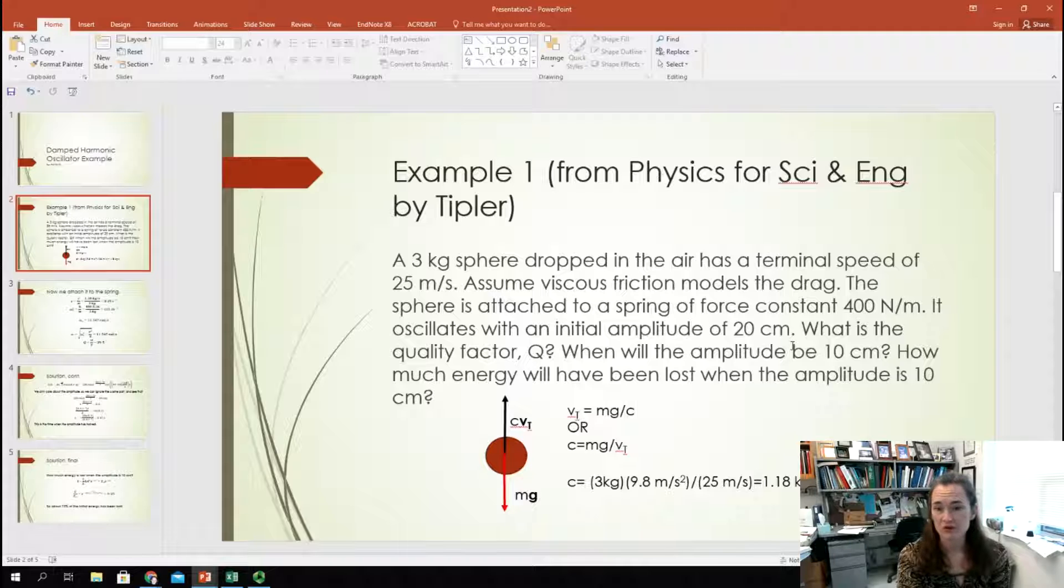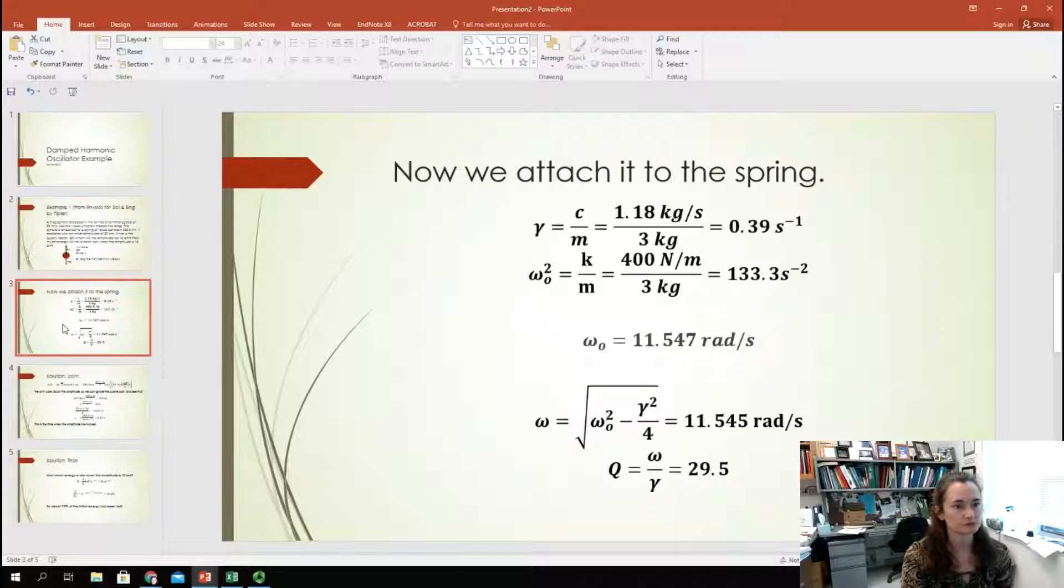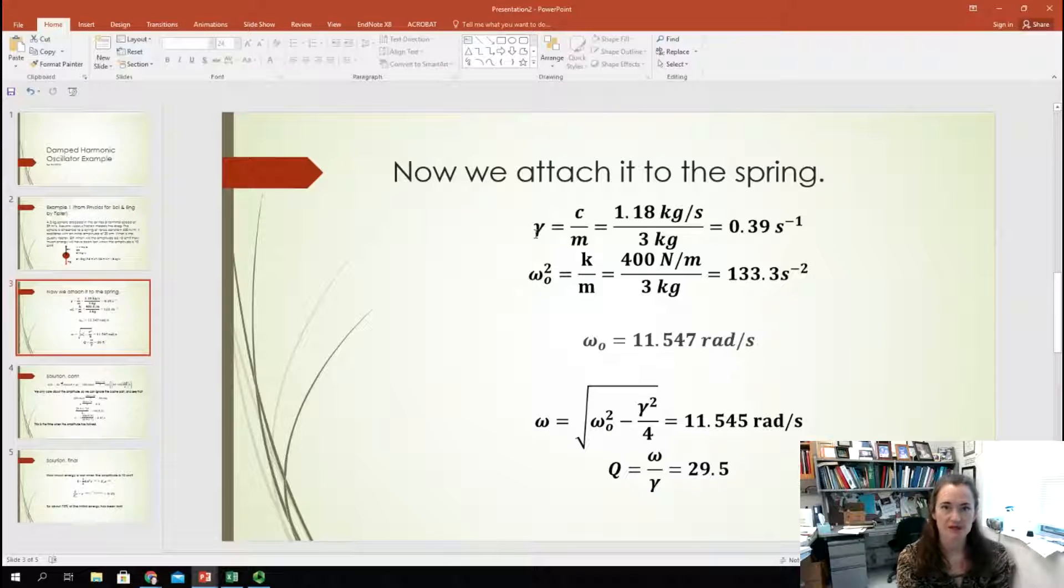Alright. So, the next part of the problem says, what is the quality factor q? Okay. In a previous lecture on damping, we went over a lot of these different constants. So, we defined gamma as kind of shorthand damping, which is equal to c over m. So, gamma is equal to 1.18 kilograms per second divided by 3 kilograms, which is about 0.4 inverse seconds for this problem.